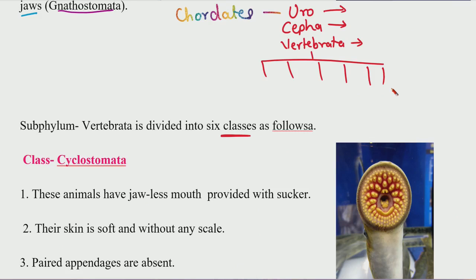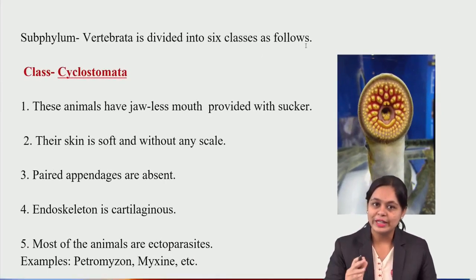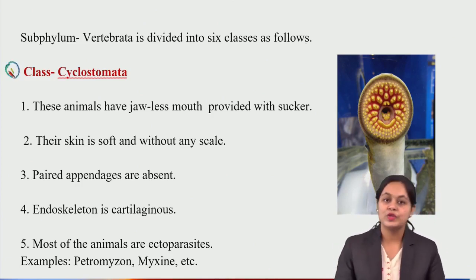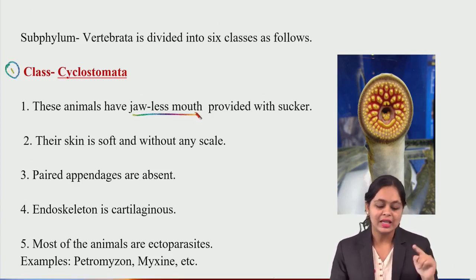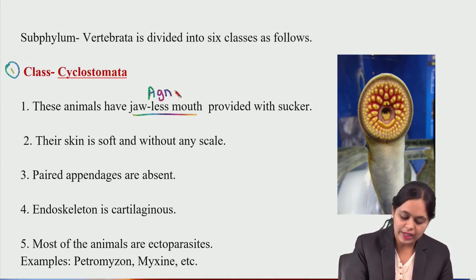Chordata has three subphyla: Urochordata, Cephalochordata, and Vertebrata. Vertebrata is further classified into six classes. Now we will move to the first class, that is Cyclostomata. These animals have a jawless mouth — also called Agnatha.